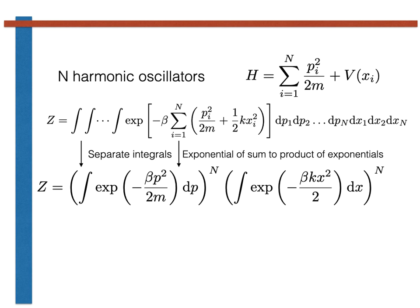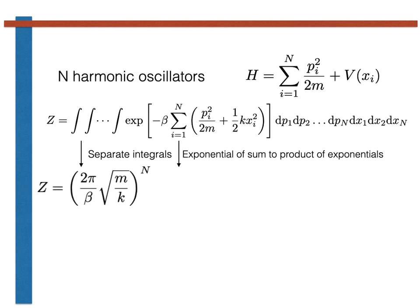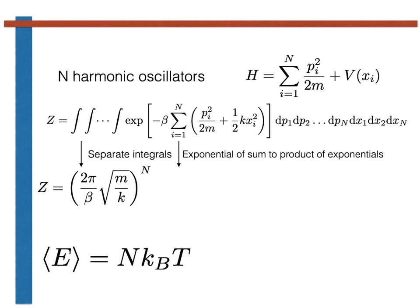By a similar token, the average energy of the N oscillators is N kBT and the heat capacity is N kB. Pretty neat, huh? Thanks for your attention.